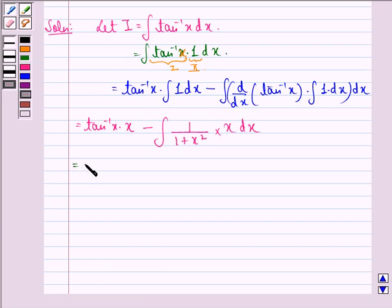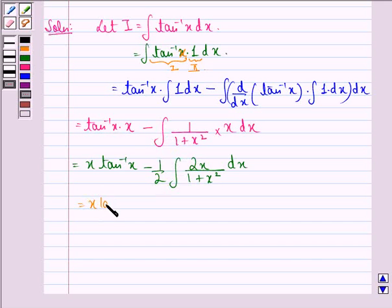This is equal to x tan inverse x minus 1 by 2 integral 2x by 1 plus x square dx. What we have done is we have multiplied the numerator and denominator by 2 and we have taken 1 by 2 out of the integral sign.